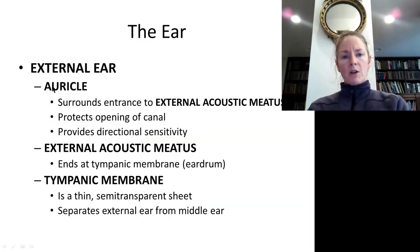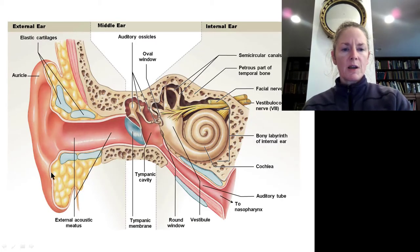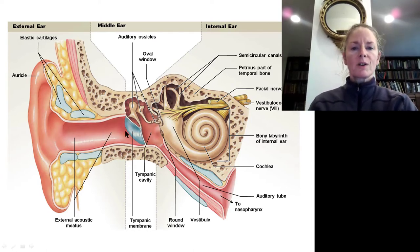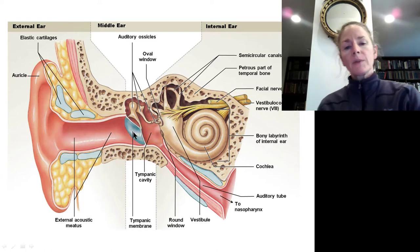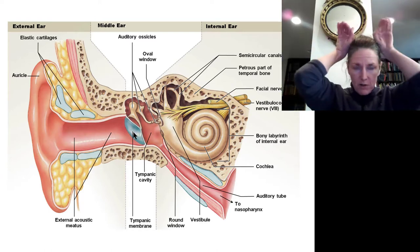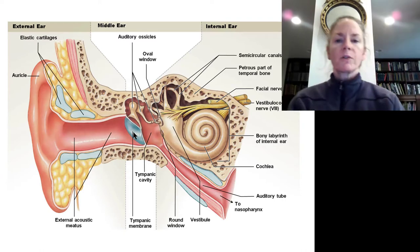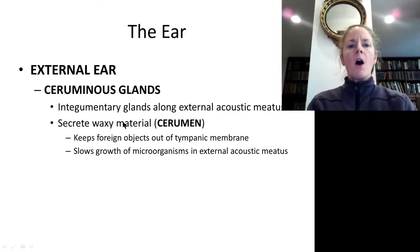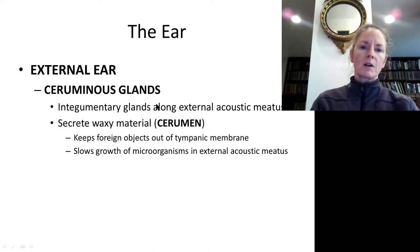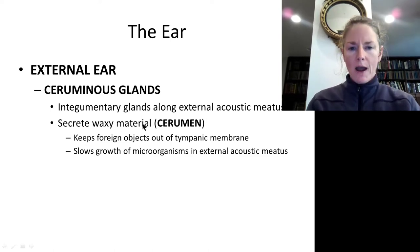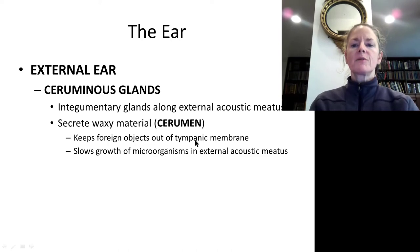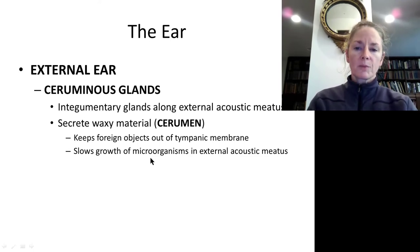The auricle surrounds the external acoustic meatus and acts as a funnel to direct sound into it, where it is directed toward the tympanic membrane. In the external ear, we have ceruminous glands that secrete earwax. Earwax keeps debris out of the external acoustic meatus and away from the tympanic membrane, and it slows the growth of microorganisms.